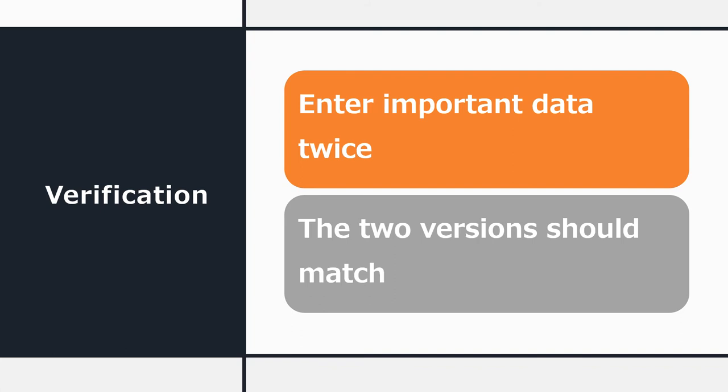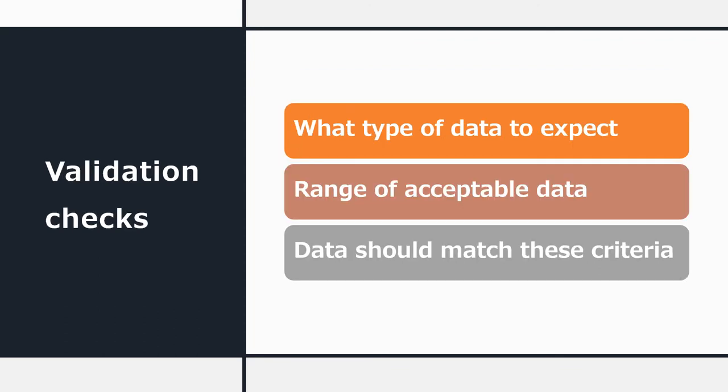Verification means that we enter important data twice and the two versions should match. You may be familiar with this — we often use verification when you change your password or enter your email address, requiring you to type it twice. Validation doesn't require entering data twice, so it's faster for the user. We set up various checks inside the computer software telling it what type of data to expect, or the range of acceptable answers, and the computer checks every input against those validation criteria. This doesn't eliminate all errors, but it does eliminate some of them.